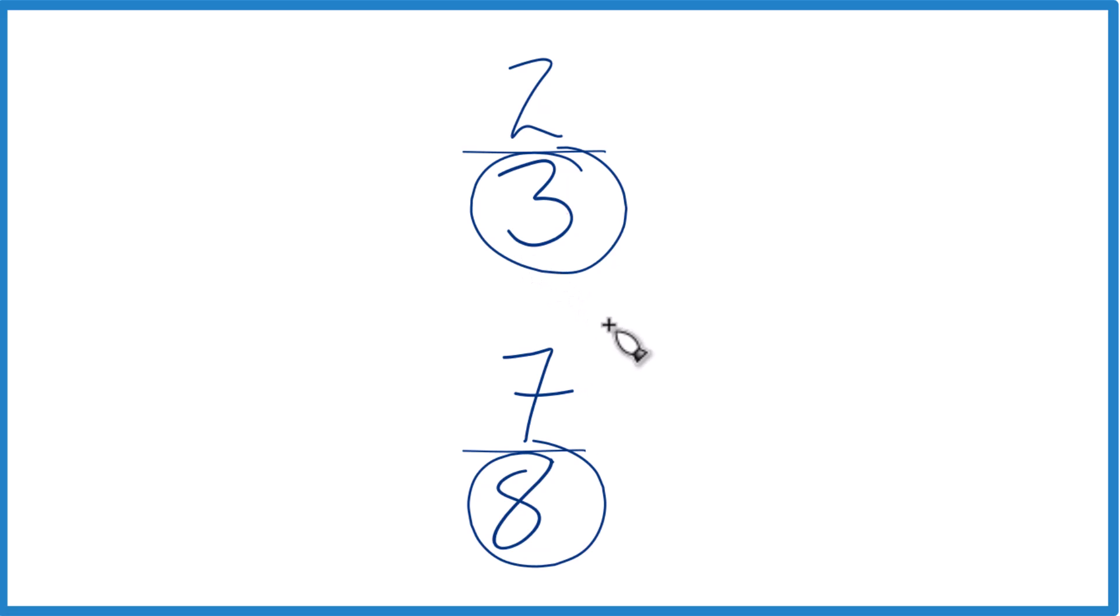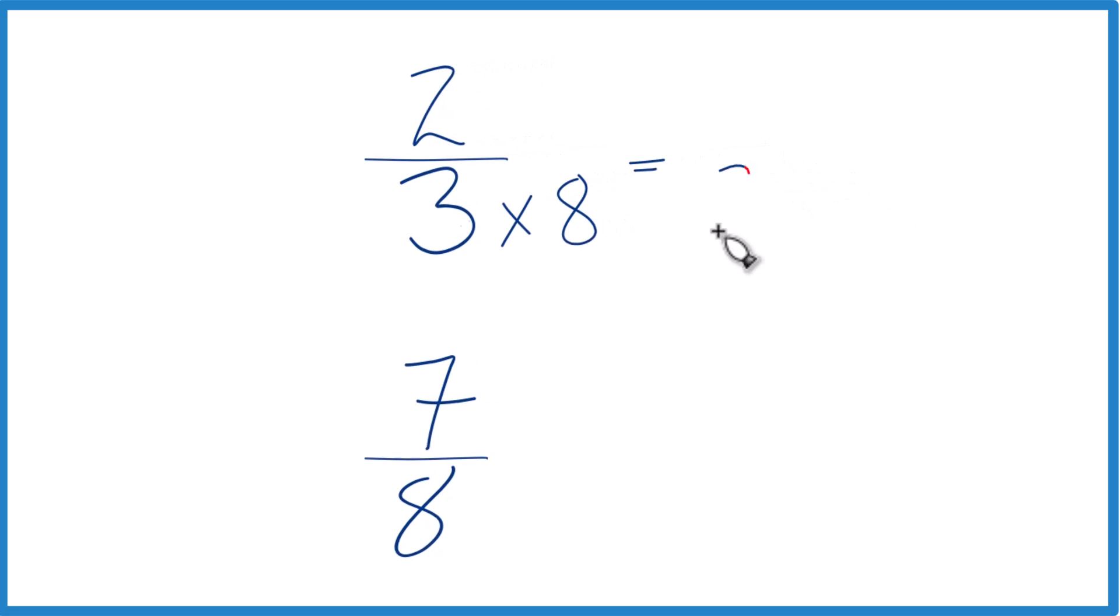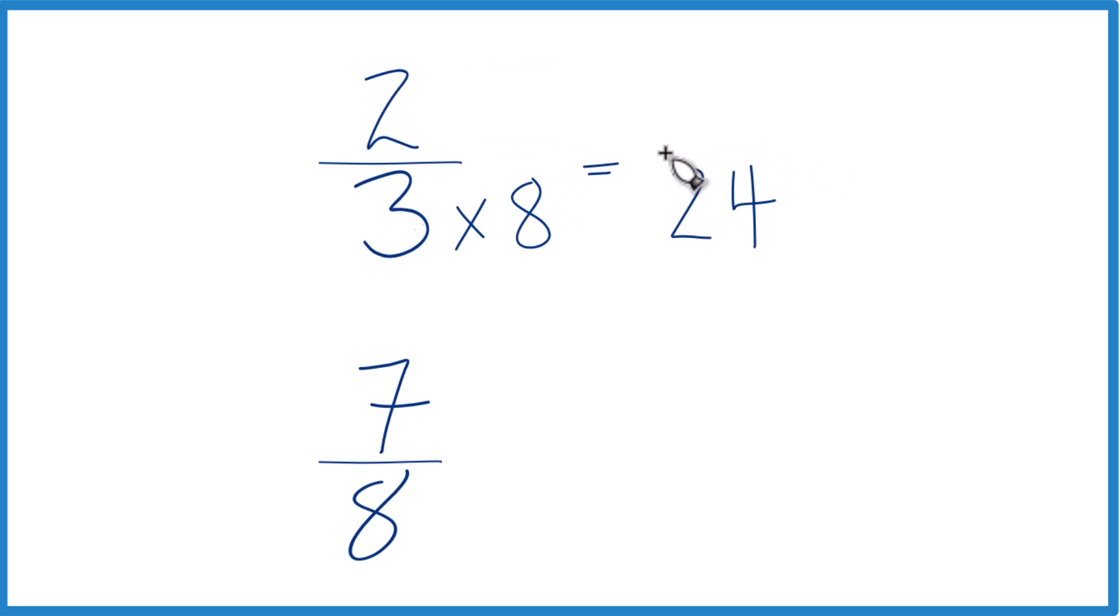Three times eight is 24. And then down here I'm going to take eight times three. Eight times three equals 24. You can see now we have the same denominator.